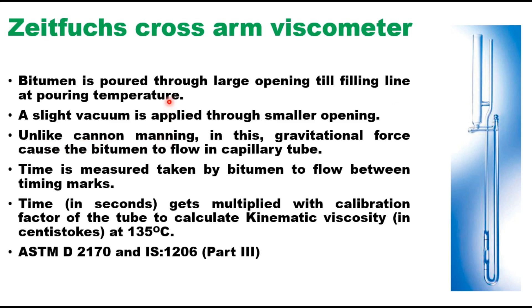Now here asphalt cement is pulled into the large opening of the viscometer till filling the line at pouring temperature and this is the filling line. A slight vacuum is applied to the small opening or a slight pressure is applied to the large opening to induce the flow of the bitumen over the siphon section just above the filling line. Then the gravitational force causes the bitumen to flow downward in the vertical direction of the capillary tube.